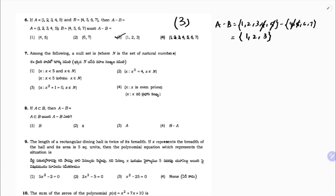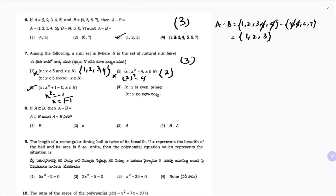Seventh question: among the following, which is a null set where N is the set of natural numbers? Option 1 — x less than 5 in natural numbers gives {1, 2, 3, 4}, not null. Option 2 — x square equals 4 gives x equals 2, also not null. Option 3 — x square plus 1 equals 0 gives x equals root of minus 1, which is not a natural number, so this set is null. Option 4 — even prime gives 2, not null. So the correct option is 3.